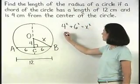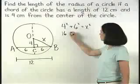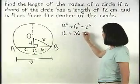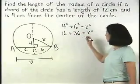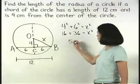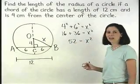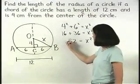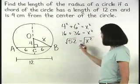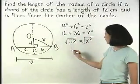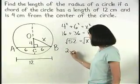This simplifies to 16 plus 36 equals X squared, or 52 equals X squared. Square rooting both sides, the square root of 52 simplifies to 2 root 13.